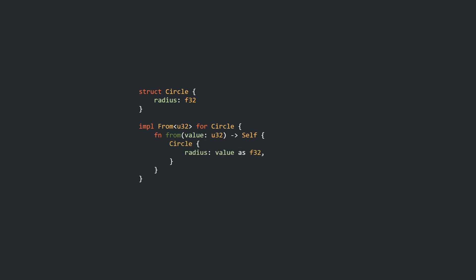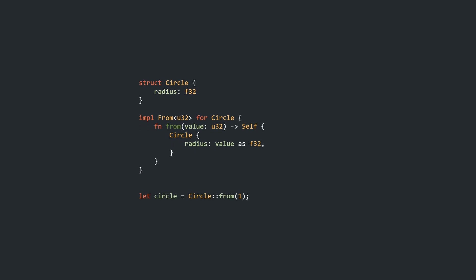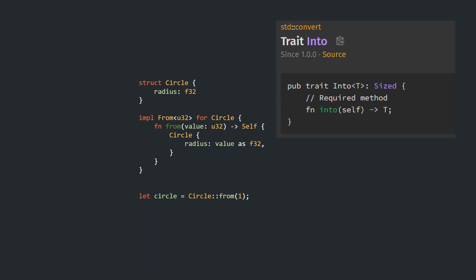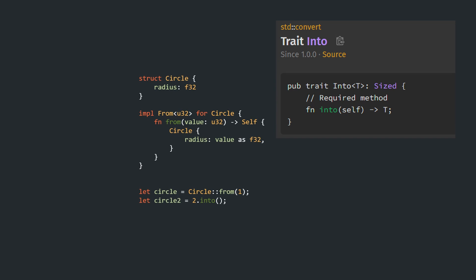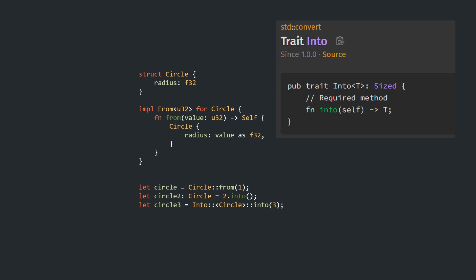Once the trait is implemented, we can now use Circle::from to convert a U32 into a Circle. But that's not all. Because we implemented From<U32> for Circle, Rust automatically implements the counterpart of the From trait, which is called Into. This means that Into<Circle> for U32 exists without requiring us to write any additional line of code. So we can call `.into()` on any U32 to create a Circle. However, because there might be multiple types that a U32 can be converted into, we need type annotations to clarify this for the compiler.